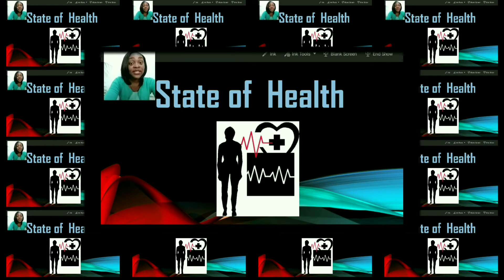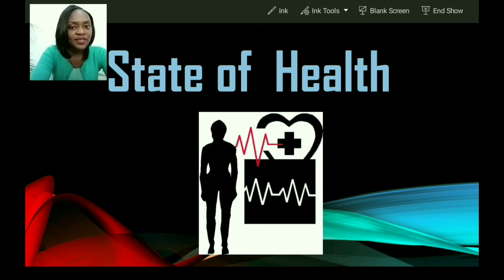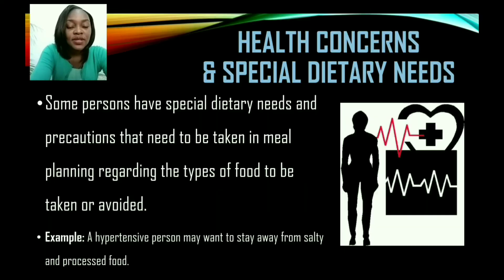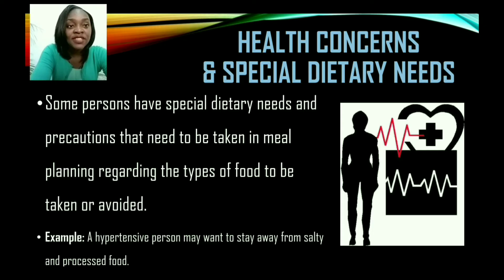The first factor that we'll be looking at is state of health. How do you think one's state of health will determine the type of food they're supposed to eat or not? Some persons have special dietary needs and precautions that need to be taken in meal planning regarding the types of food to be taken or avoided.